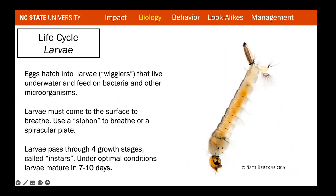Getting a handle on the larval and pupal life stages can put a huge dent in the adult mosquito population. Larvae live underwater, feeding on bacteria and microorganisms, and must come to the surface to breathe. Some mosquito species use a siphon to breathe; Anopheles do not — they have a spiracular plate and lie flat on top of the water instead. This is one way you can tell apart major species just by looking at the larvae.